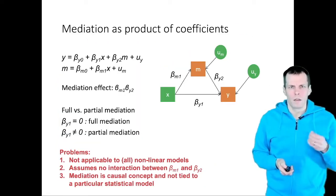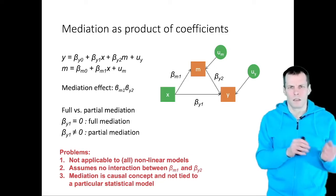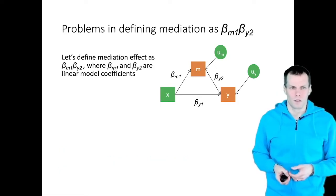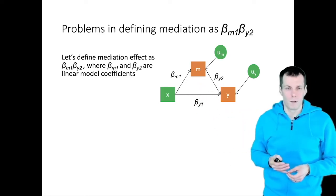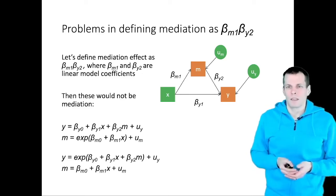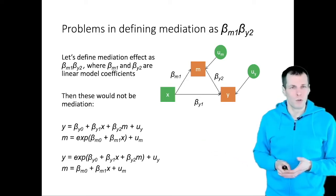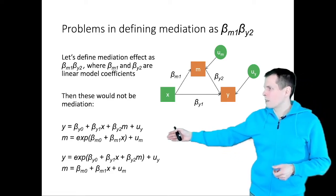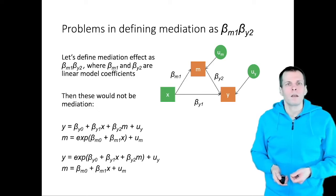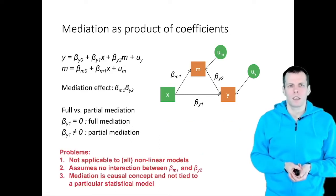The third problem is that mediation is really a causal concept and not a statistical concept tied to a particular model. If we define mediation as a product of two coefficients from a linear model, then the non-linear examples we just went through wouldn't count as mediation. But most researchers would say those are mediation models because m is affected by x and then m affects y — there's a chain of causality. Defining mediation in terms of a linear model is incompatible with how researchers actually think about mediation.